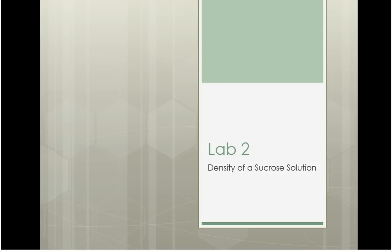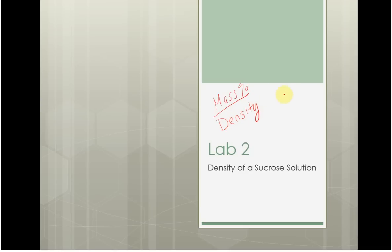This is the video for lab 2, the density of a sucrose solution. For this lab, you're going to be making a sucrose solution, which is just sugar. You're going to be making a solution of a specific mass percent. Then, after you have made the solution, you're going to evaluate its density, and then look at the percent error of that density by comparing it to published values.